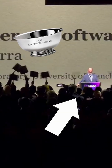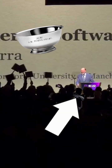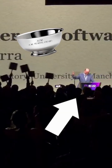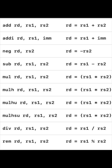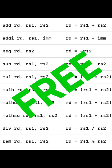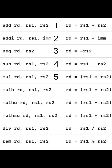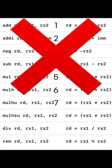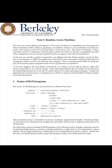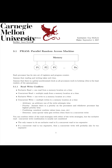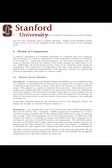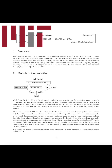Turing Award winner Jack Dongara told me that in high-performance settings, operations are essentially free, so counting instructions is not a good proxy for performance. So why does every CS course use the RAM model for asymptotic runtime, and what should we use?